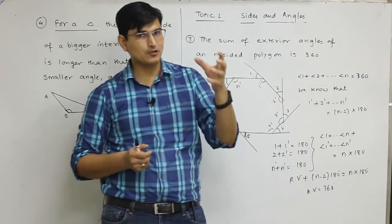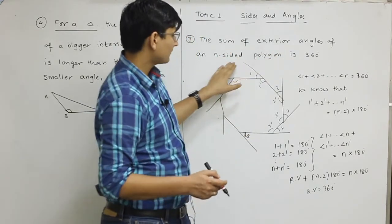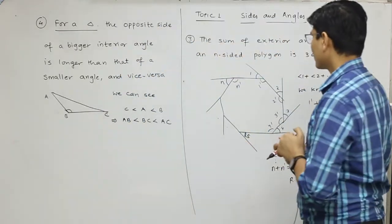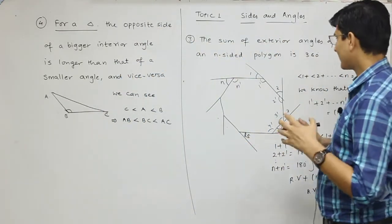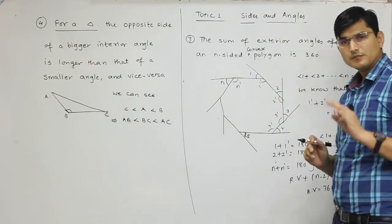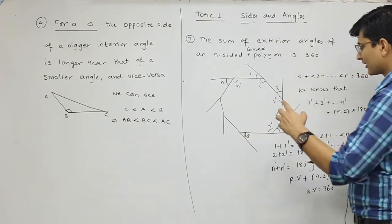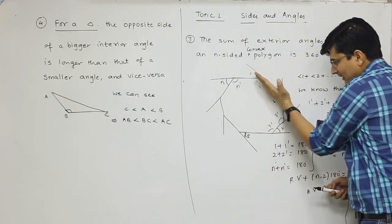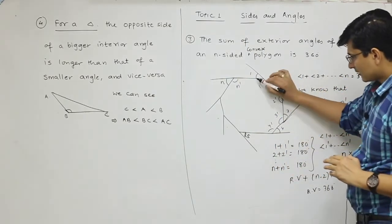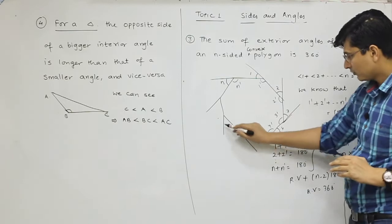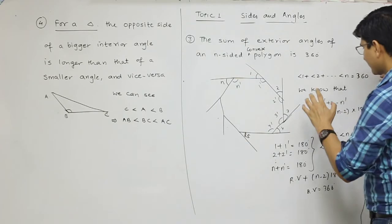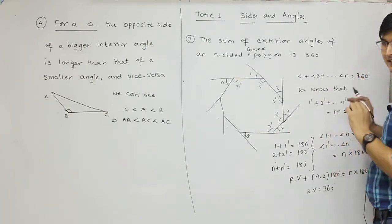If we extend this property further, the sum of exterior angles is 360. This is for a convex polygon. What is an exterior angle? If I extend this line like this, these angles formed 1, 2, 3 up to n, these are called exterior angles.